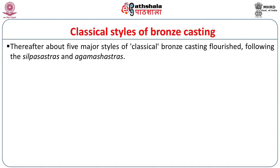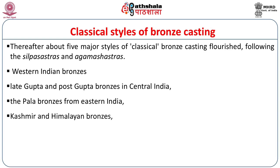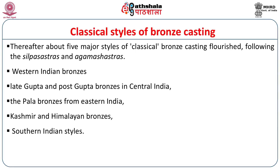There are about five major schools of bronze casting which emerge across different regions in the Indian subcontinent: the Western Indian bronzes, which are often Jain; the late Gupta and post-Gupta bronzes of Central India; the Pala bronzes of Eastern India, which are mainly Buddhist; the Kashmir and Himalayan bronzes, which include important Brahminical and often Buddhist examples; and the South Indian styles, which encompass mainly Hindu but also Buddhist and Jain bronzes and metal icons.